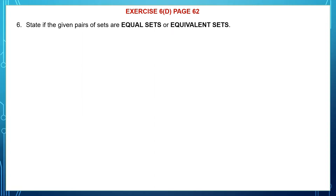Equal sets are two sets in which the elements are the same. Equivalent sets are two sets in which the number of elements are the same.